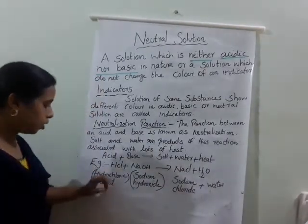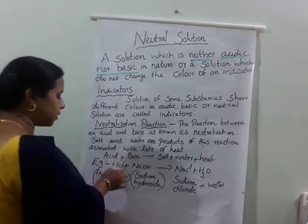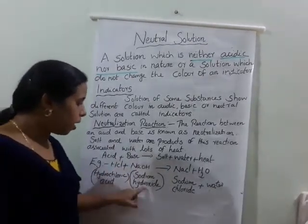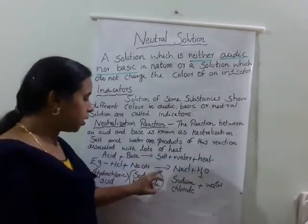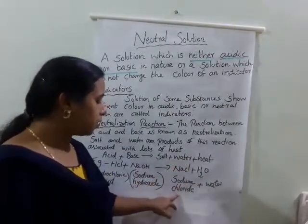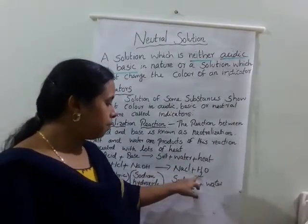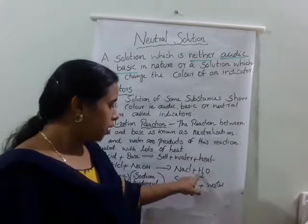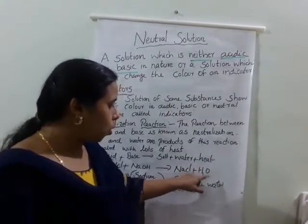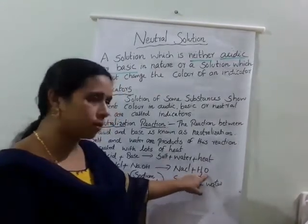The acid chosen is hydrochloric acid and it combines with sodium hydroxide. There is the formation of one salt — sodium chloride — and at the same time water is produced. Water is written as H₂O: two hydrogen and one oxygen.